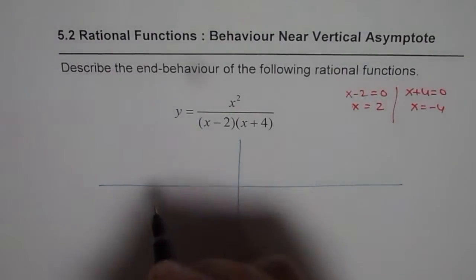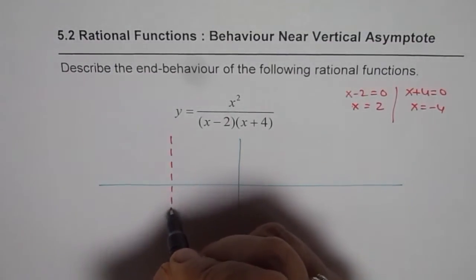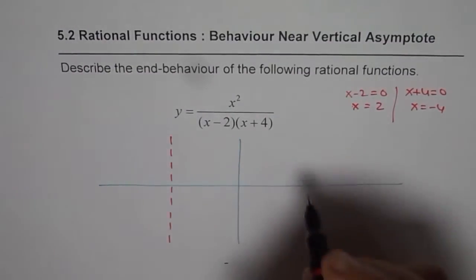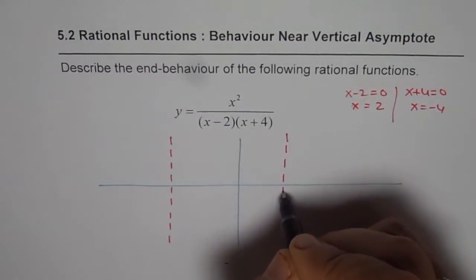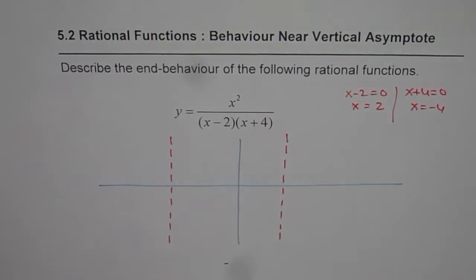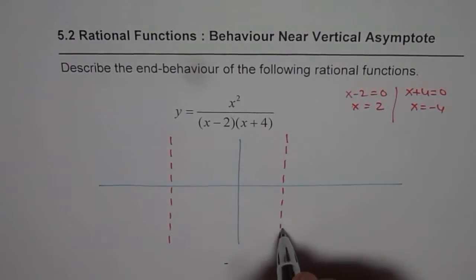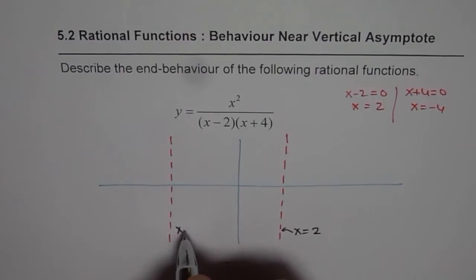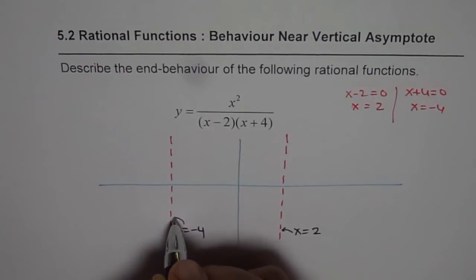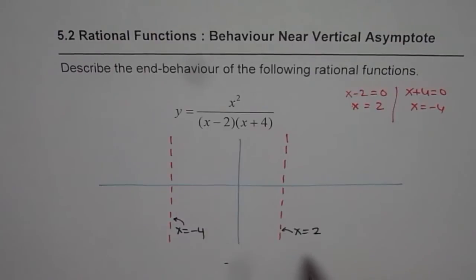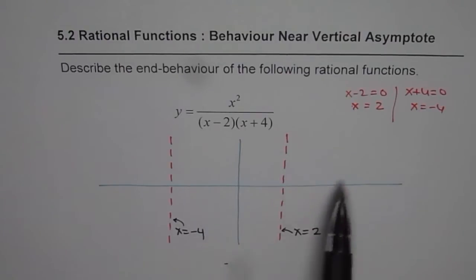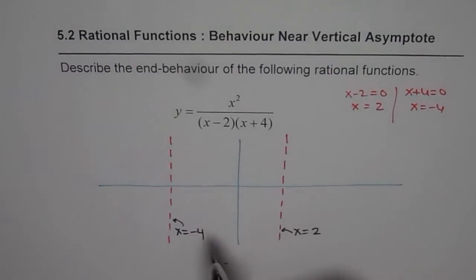Let me sketch the vertical asymptotes. This one is for x equals minus 4 and this one is for x equals 2. The equations for the vertical asymptotes are x equals 2 and x equals minus 4. Now the two things we are considering are: behavior near these vertical asymptotes, and the end behavior.